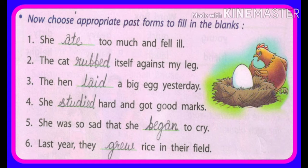Number two: The cat rubbed itself against my leg. Billy ने मेरे पैर के पास में rubbed किया. Number three: The hen laid a big egg yesterday. मुर्गी एक बड़ा अंडा कल दी. Number four: She studied hard and got good marks. वो जादा मेहनत की, जादा पढ़ाई की और good marks score की.